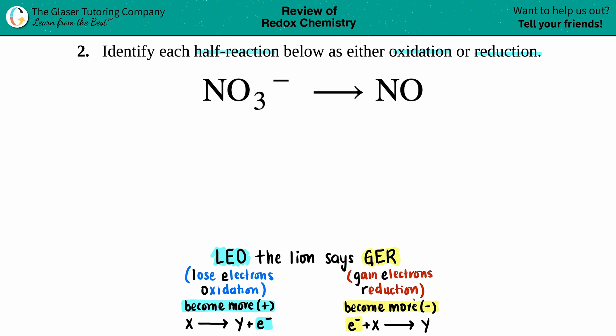If you're gaining electrons, remember electrons are negative, so you're going to become more negative. The easiest way though is to just see where your electrons are. If you have a half reaction, anytime that you have electrons on the product side, that's always oxidation. On the flip side, anytime that you have electrons on your reactant side, that's reduction.